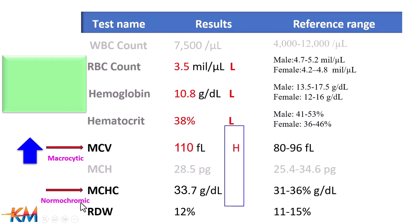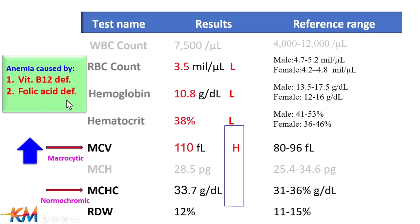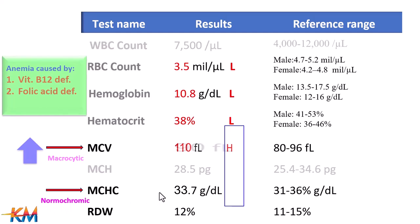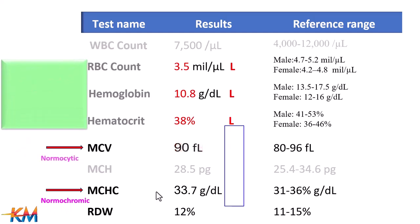The second possibility is an increase in MCV — macrocytic — while MCHC is normal, which is called normochromic. In this case, the cause of anemia is deficiency of vitamin B12 and folic acid, and the anemia is called macrocytic normochromic anemia.